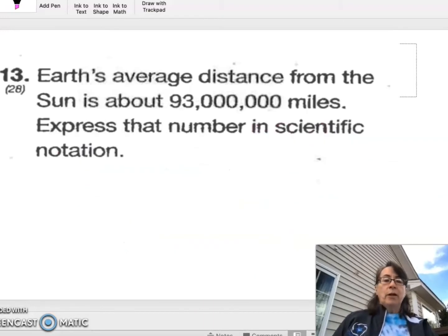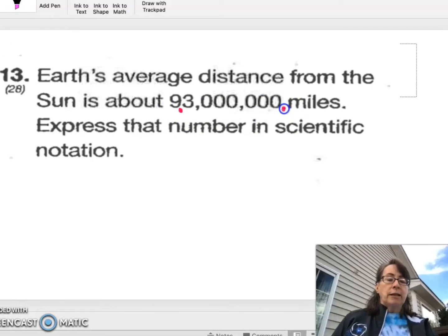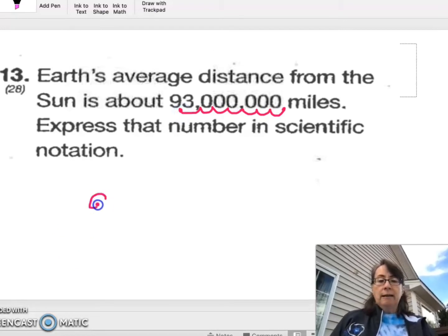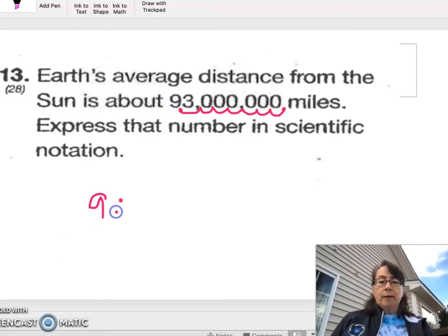Number 13. Earth's average distance from the sun is about 93 million miles. Express that number in scientific notation. So remember, the decimal's got to come here from where it is right now, which is at the end of the number. So we're going to move 1, 2, 3, 4, 5, 6, 7 to the left to get 9.3.